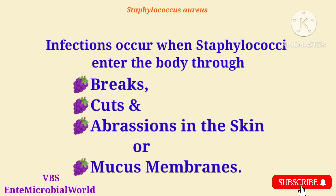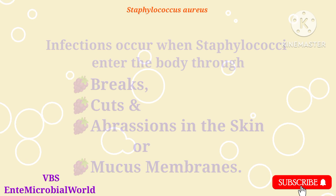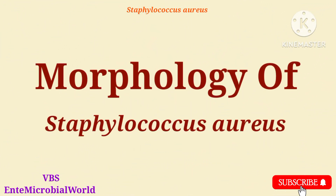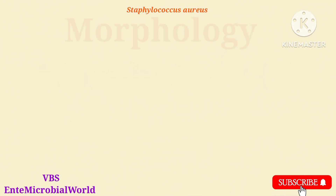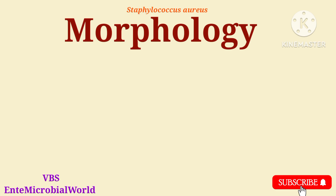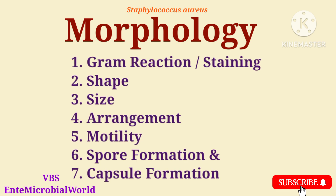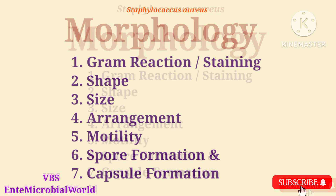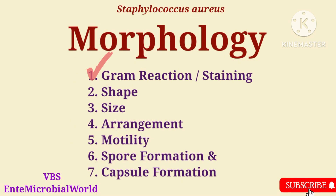Next, we are going to see the morphology of Staphylococcus aureus. Under morphology, we are going to study about the Gram reaction, shape, size, arrangement, motility, spore formation, and capsule formation. Let's start with Gram staining.